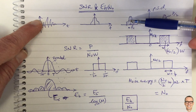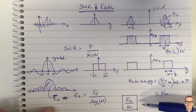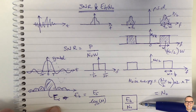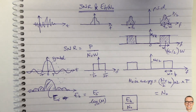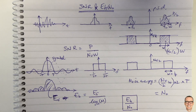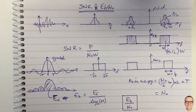So that's the difference between a power ratio — SNR — and the energy ratio, which is Eb/N0. Don't forget to like this video, it helps others find it, and subscribe to the channel for more videos. Check out the other links below for supporting videos.